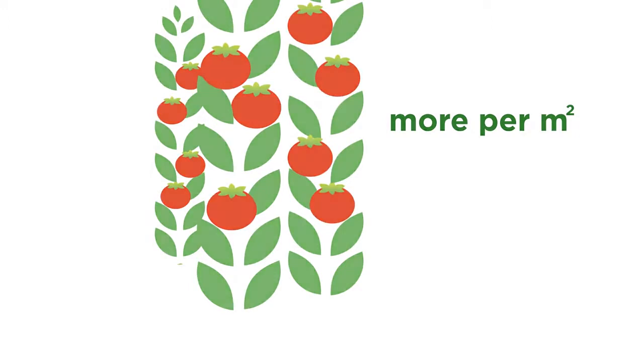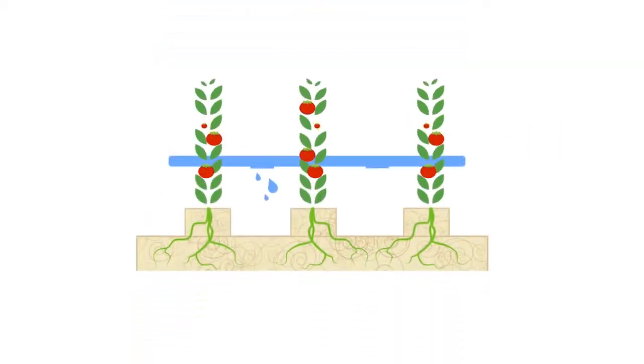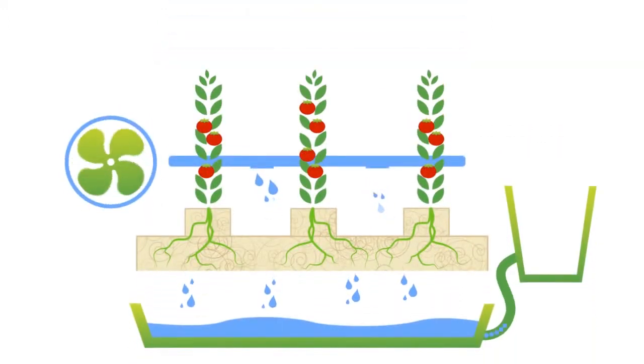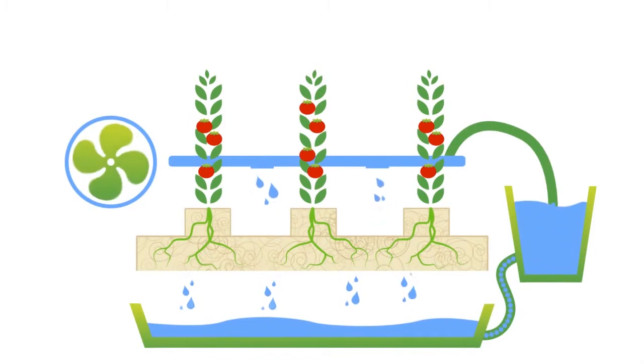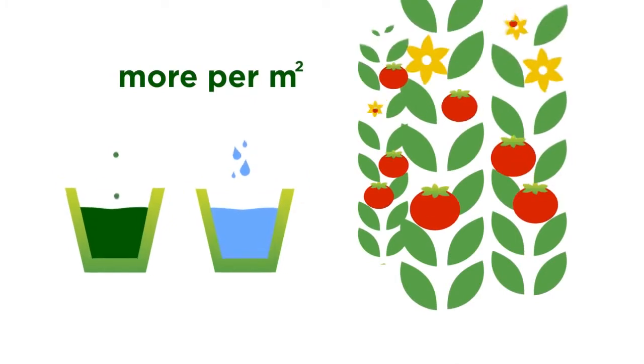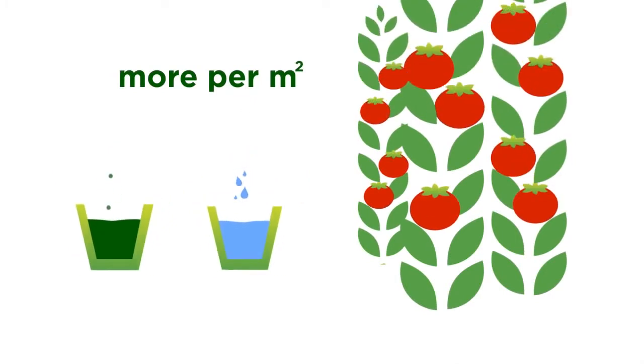And what's more, the water and nutrients that drain out of the stone wool can easily be collected and reused because stone wool is a clean growing medium. More can be produced using the fewest possible resources in such a way that the quality of the tomatoes is improved.